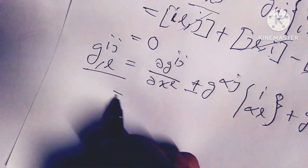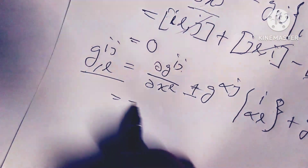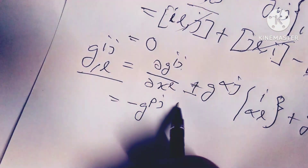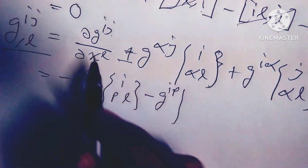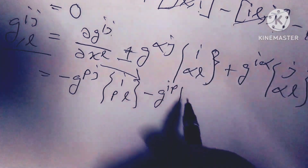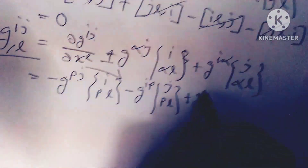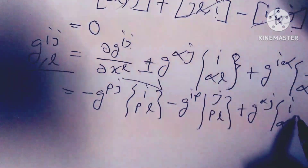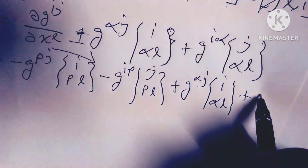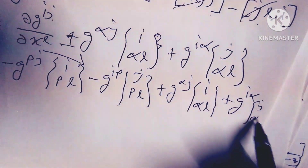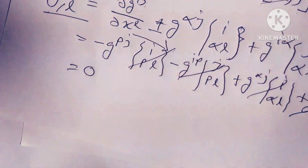Applying the equations, del g^ij can be written as g^{pj} [ip, l] minus g^{ip} [jp, l] plus g^{alpha j} [i alpha, l] plus g^{i alpha} [j alpha, l]. Here p tends to alpha, so all terms cancel and we get zero.